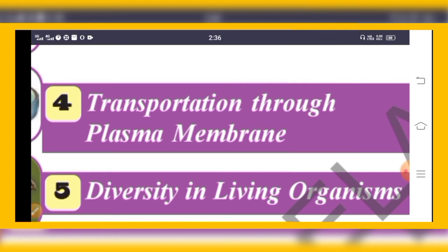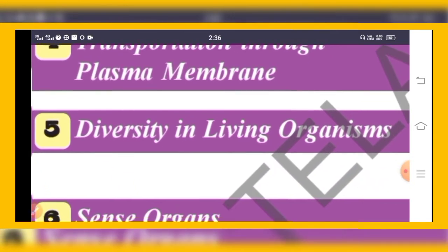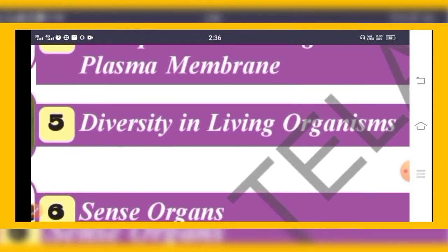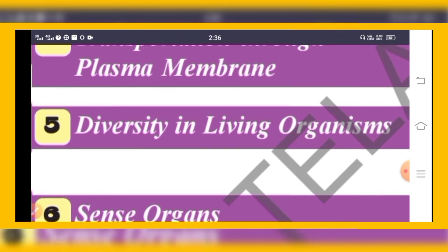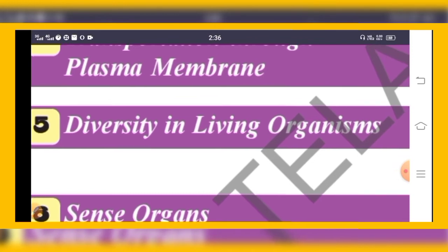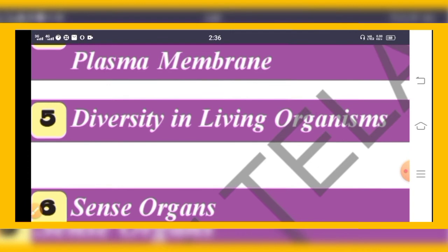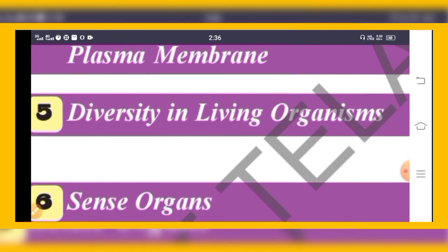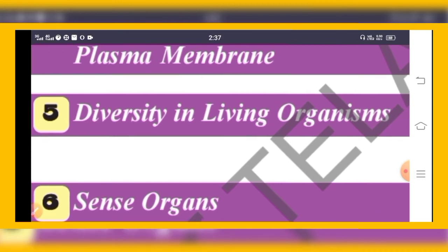The fifth chapter is Diversity in Living Organisms. Diversity means organisms having different characteristics. For example, we are all human beings but we have different characteristics regarding height, weight, and color — some have white color, some black, some are tall and some short. These variations exist among plants, animals, and human beings. That is called diversity.